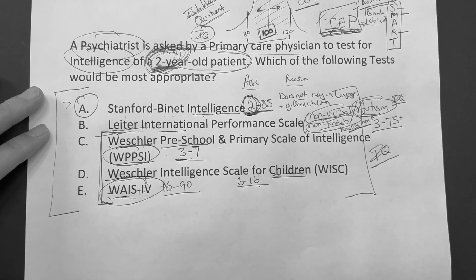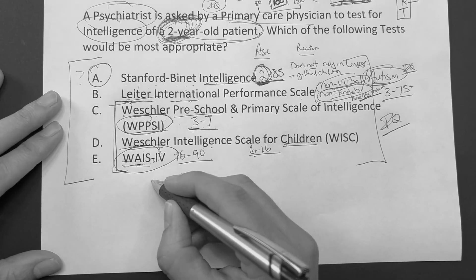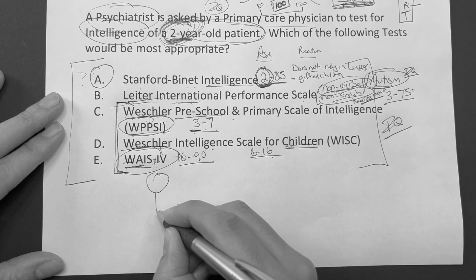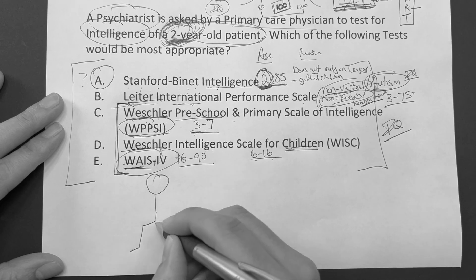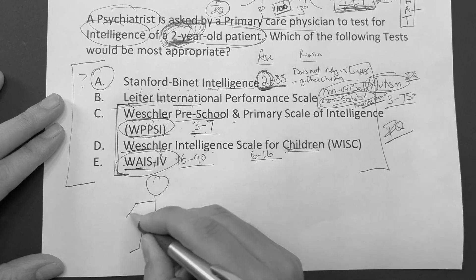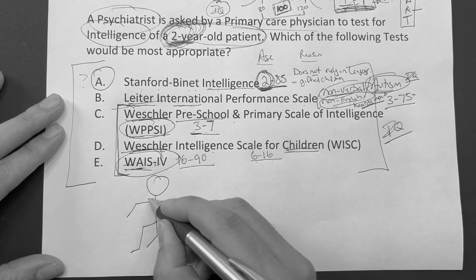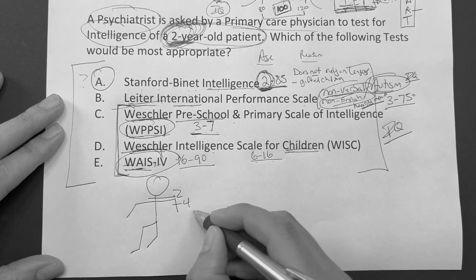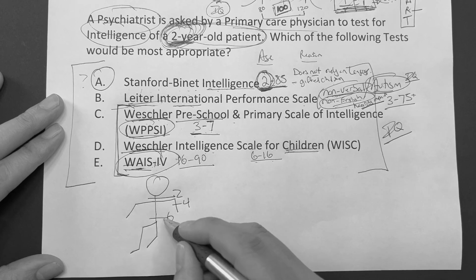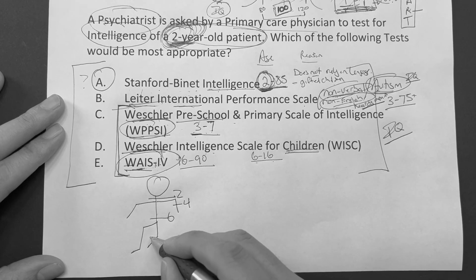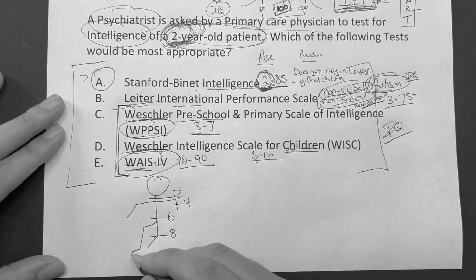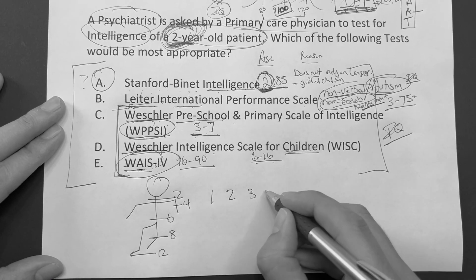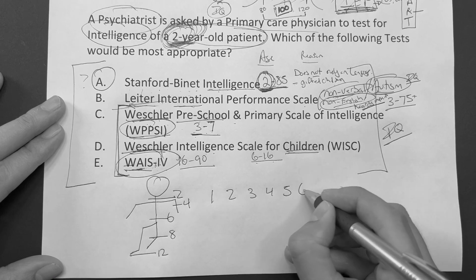Just in review, since we're here — when we're doing developmental milestones, let's go through these by memory. At two months, they hold their head up. At four months, they can turn over. At six months, they can sit up. At eight months, they can crawl. And at 12 months, they should walk.